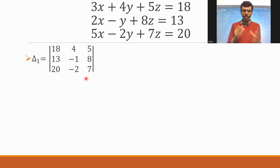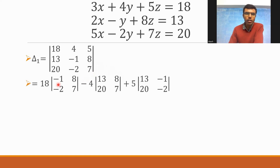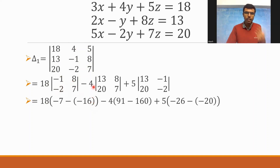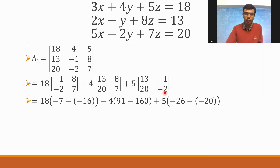Delta 1 expands as: 18 into det[-1, 8; -2, 7], minus 4 into det[13, 8; 20, 7], plus 5 into det[13, -1; 20, -2]. That gives 18×(-1×7 minus -2×8) minus 4×(13×7 minus 20×8) plus 5×(13×(-2) minus 20×(-1)), which is 18×(-7 + 16) minus 4×(91 - 160) plus 5×(-26 + 20).